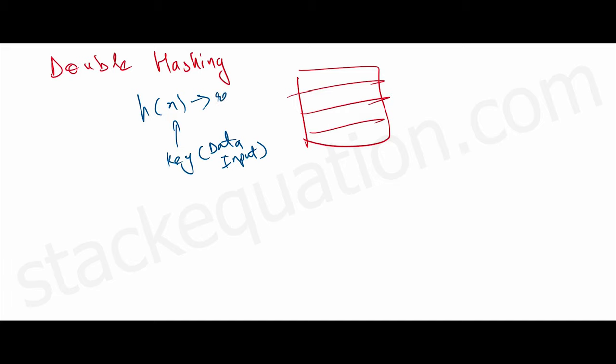The hash function returns an index where we need to place this data, but there is already data present at that index, which leads to collision.